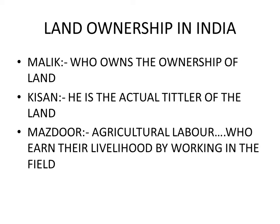In India, land ownership is divided in three ways: first is the malik, who owns the ownership of the land; second is the kisaan, who is the actual titler of the land — the one who is the real owner — that is why the word 'titler' is used; and third is the mazdoor, the agricultural labor who earns their livelihood by working in the field.